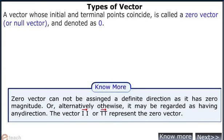Zero vectors cannot be assigned a definite direction as they have zero magnitude; alternatively, they may be regarded as having any direction. Thus, the vector II or TT represents a zero vector.